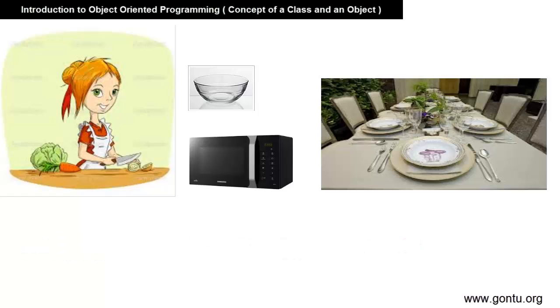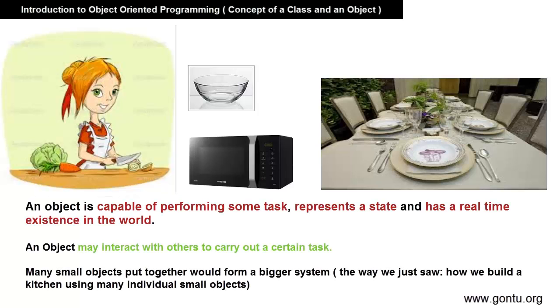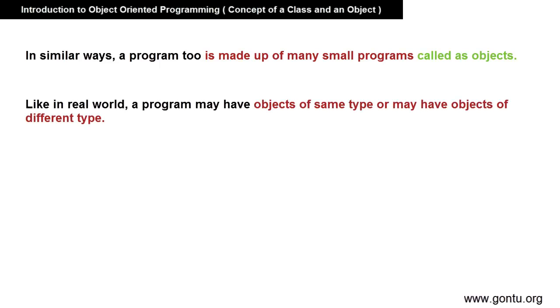To conclude here, I would say an object in a real life has the capability to perform a certain task, represents a state, some state and has a real-time existence. In a much similar way, a program or a software that you write is made up of many small programs where each such small program is called as an object. You may have many different or same type of objects in your application.